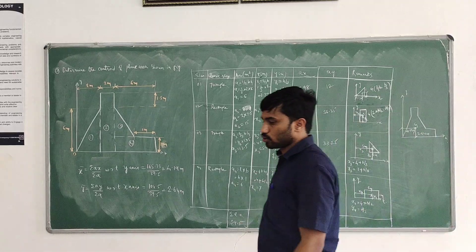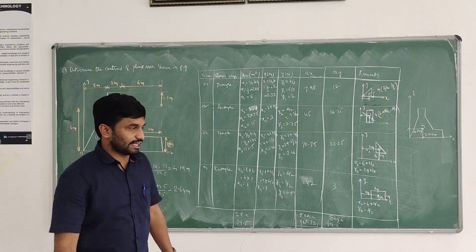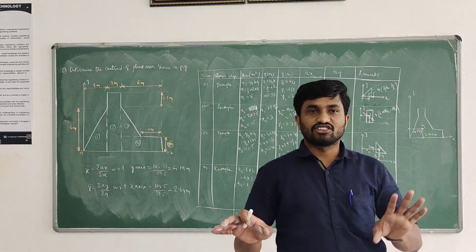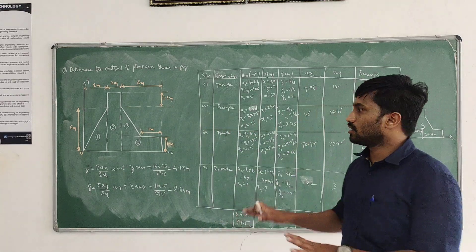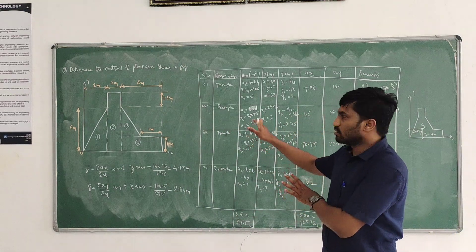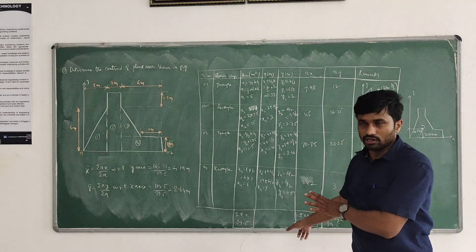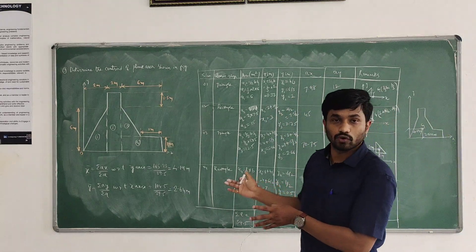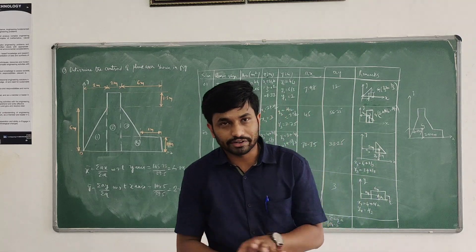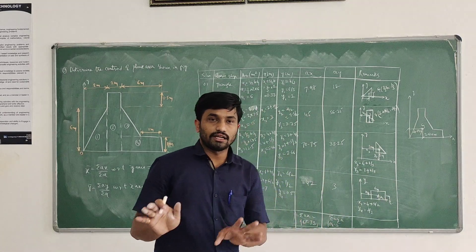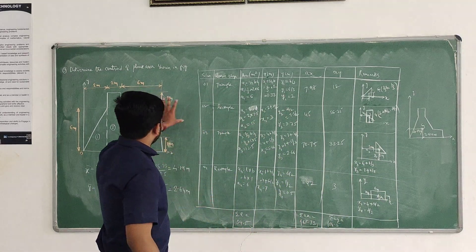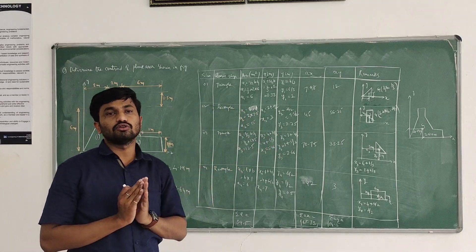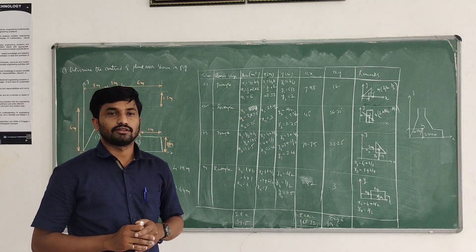This is how to compute the centroid of plane areas. There is no reduction and no shaded area — it is a direct problem. All of the plane area is in the first quadrant, so all signs of ΣAX are positive and area is also positive. This is a very simple but also very important type of problem. Thank you.